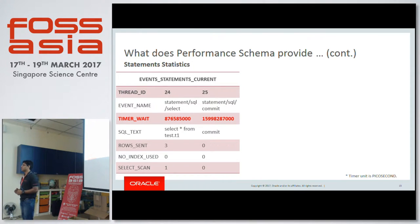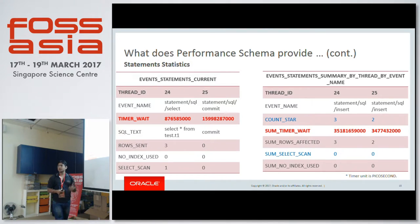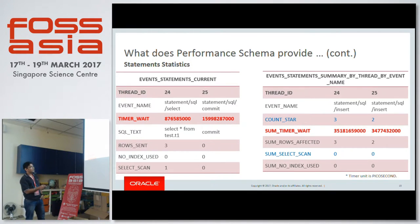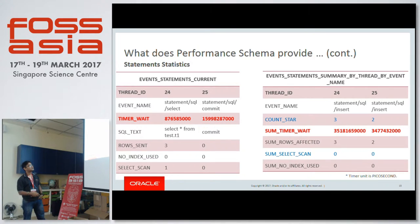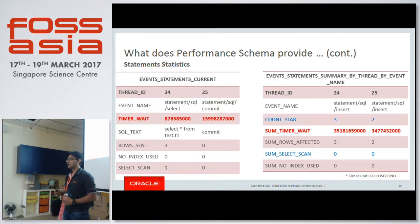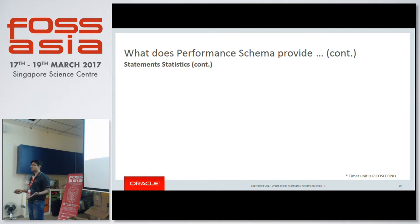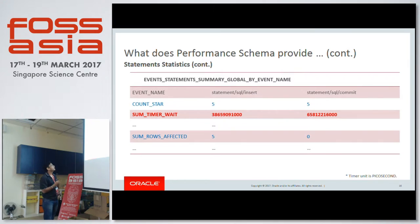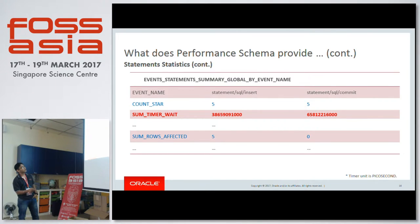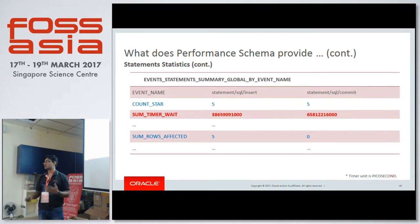If I want to know how many statements have been executed by a thread, I use the summary tables. The statement summary by thread shows thread 24 executed 3 INSERT statements with a total time, and thread 25 executed 2 INSERT statements. For a global view using summary by event name, I can see overall on the system there are 5 INSERT statements and 5 COMMIT statements executed, with their respective execution times.